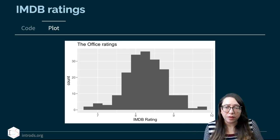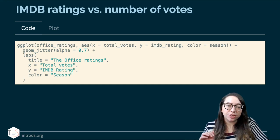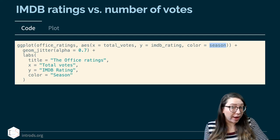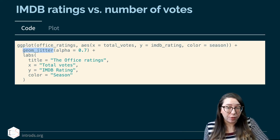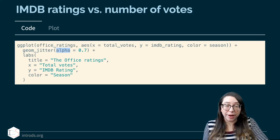We can also look at the relationship between the ratings and the number of votes. I'm going to make a scatter plot with IMDB rating on the y-axis as my outcome variable, color the points by season number — remember, that's a numerical variable — and then jitter my points and add a transparency level to reduce overplotting. The plot looks something like this.